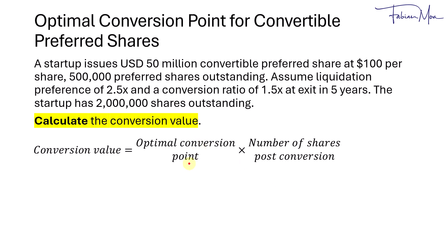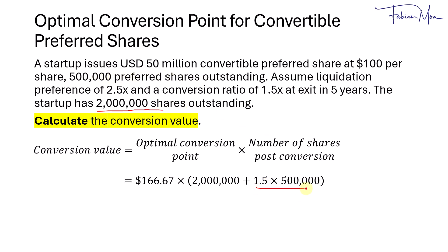The optimal conversion point is $166.67. For the number of shares post-conversion, we take the 2 million shares outstanding plus the 750,000 common shares after converting the preferred shares, giving 2,750,000 shares. That gives a conversion value of $458.3 million. We compare the equity value at exit to this conversion value to determine if it is optimal to convert the preferred shares to common shares.